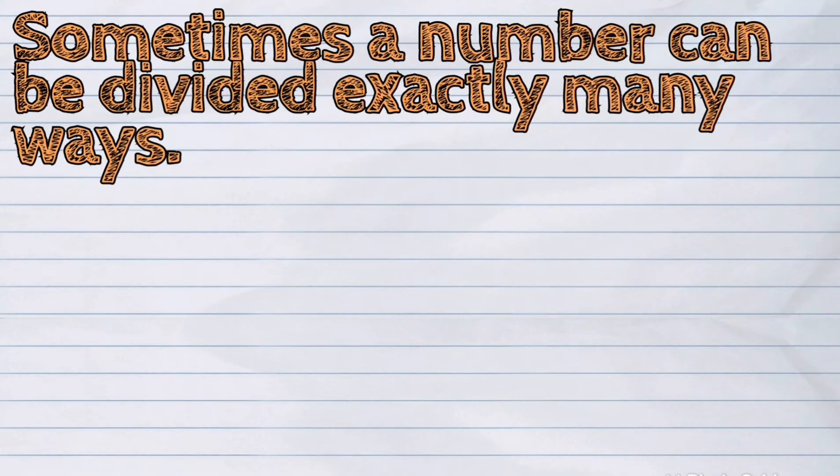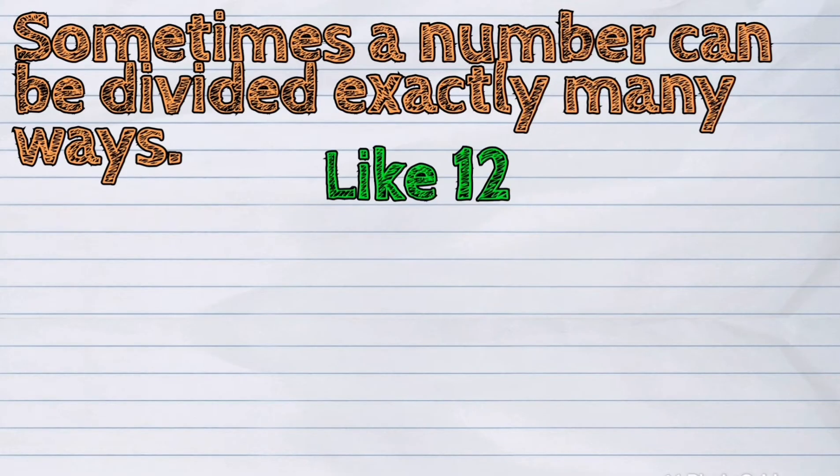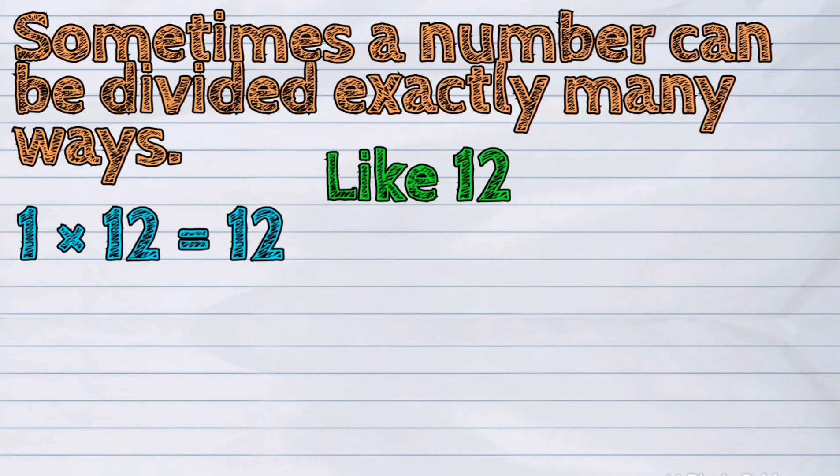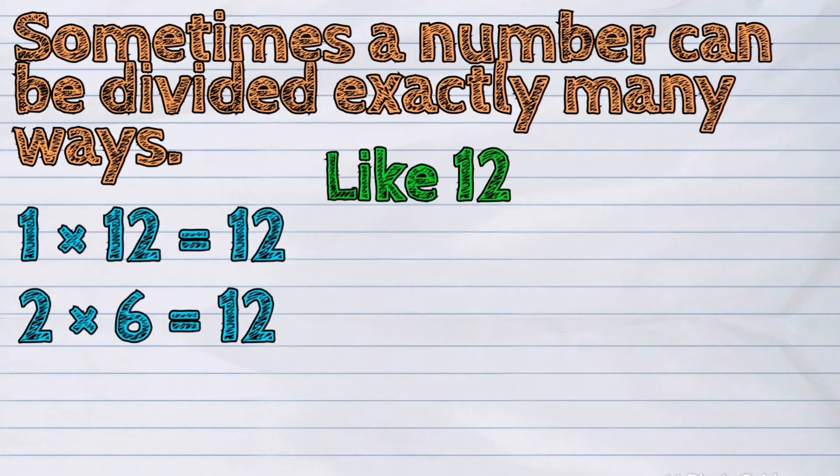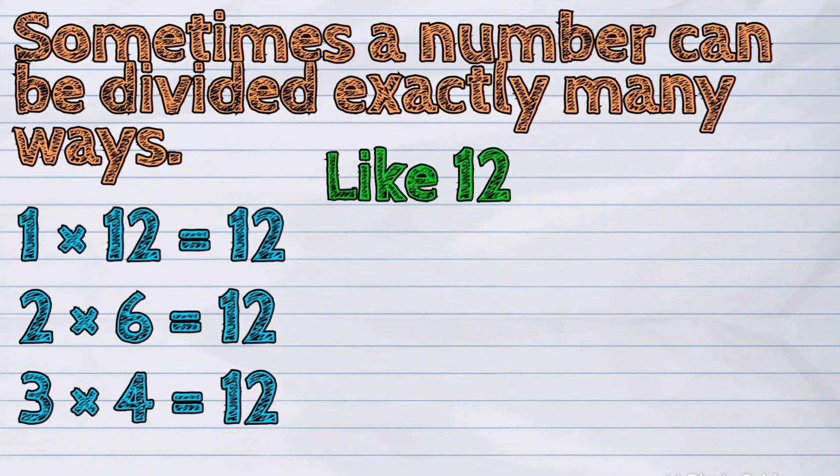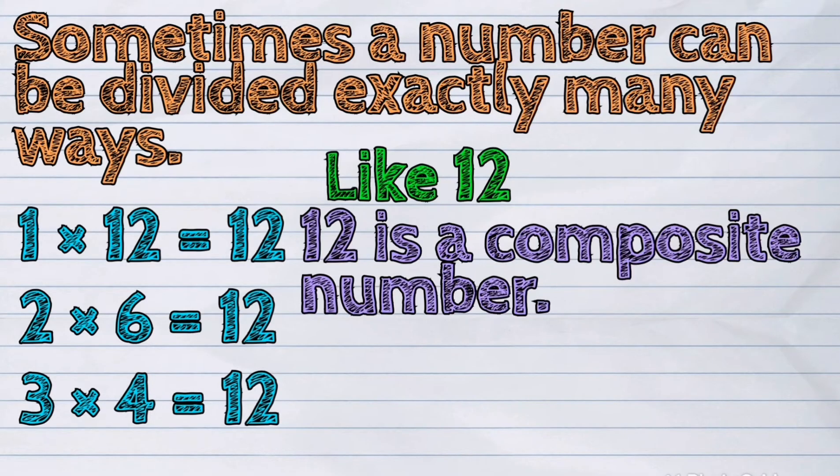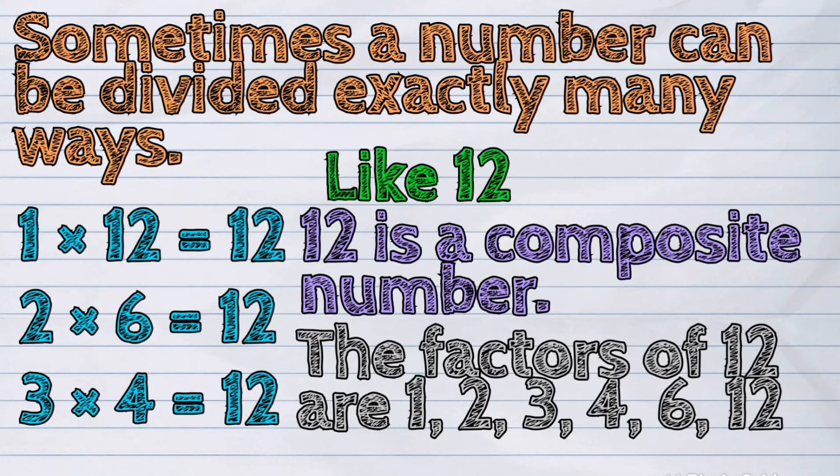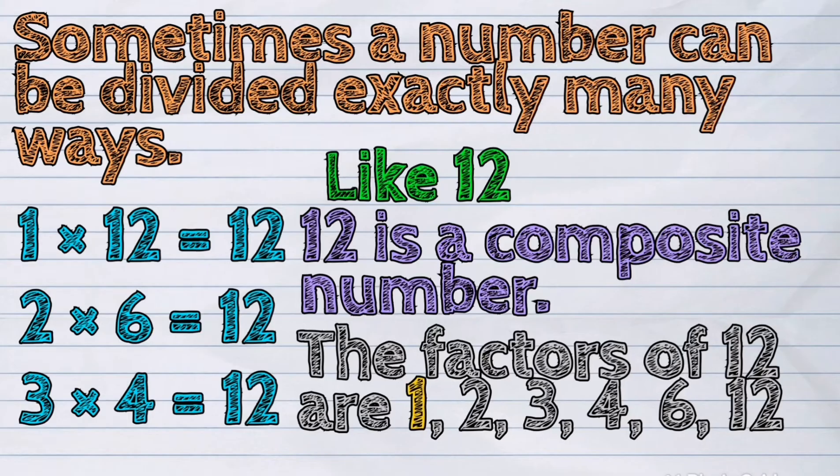Sometimes a number can be divided exactly many ways like twelve. One times twelve is equal to twelve. Two times six is also twelve. And three times four is twelve. So it means twelve is a composite number. The factors of twelve are one, two, three, four, six, and twelve.